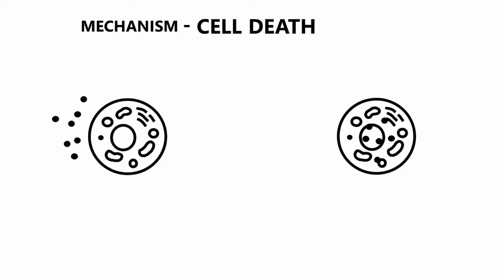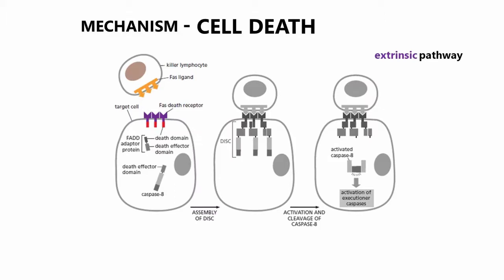Therefore, there are two main pathways that can activate apoptosis, extrinsic and intrinsic. Extrinsic pathways begin with extracellular signal binding to the receptor.